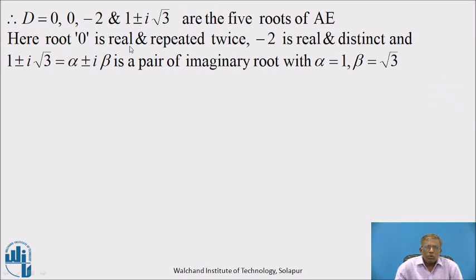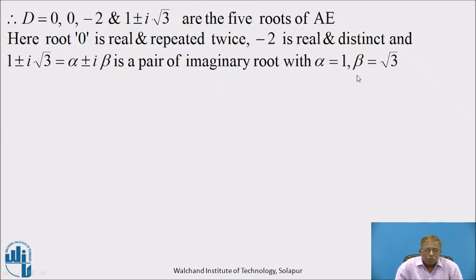Root 0 is real and repeated twice. Root −2 is real and distinct. Root 1 ± i√3 is of the α ± iβ type — a pair of imaginary roots with α = 1 and β = √3. This is the nature of the roots, and according to this nature we write the complementary function using independent variable t.